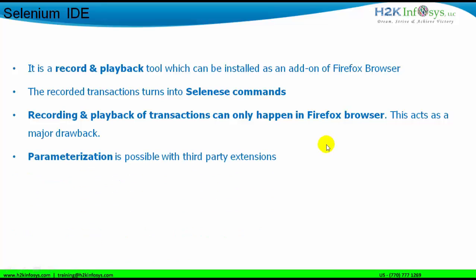Let's see what are the other negative aspects of Selenium IDE. The next negative aspect is parameterization. Parameterization is a process in which we actually test the same functionality of the application with different datasets. For example, we have a username and password in a login screen of a Gmail app, and we want to test the same login procedure with 10 different usernames and passwords. Conducting parameterization in Selenium IDE is a pain — we need to use third-party extensions. And if that third-party extension stops working because of technology changes, we are stuck with it.